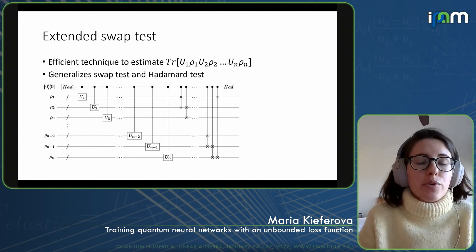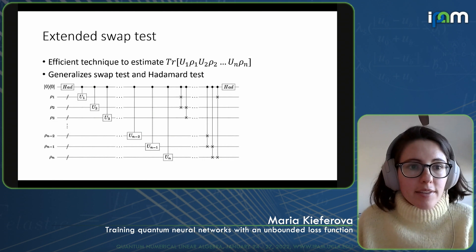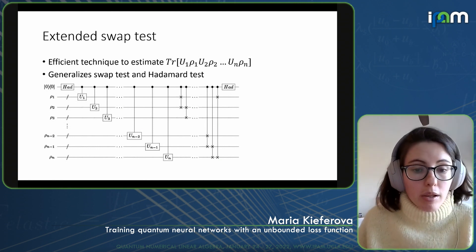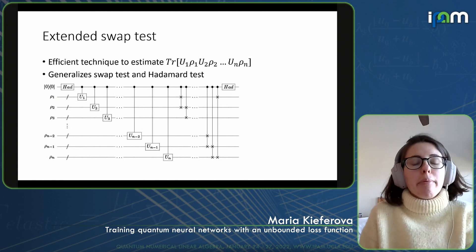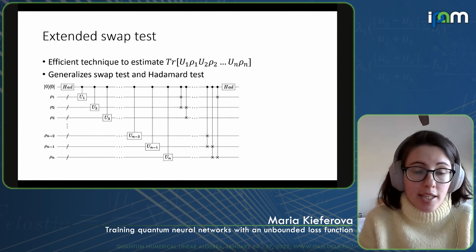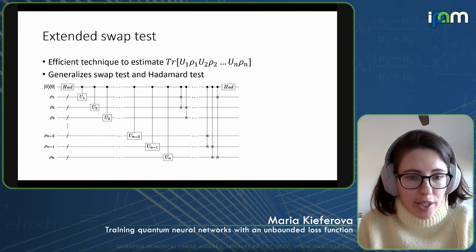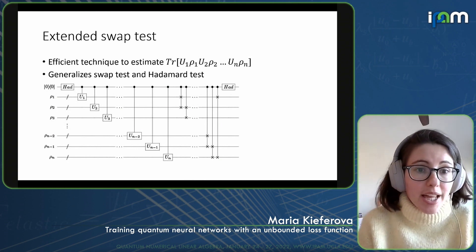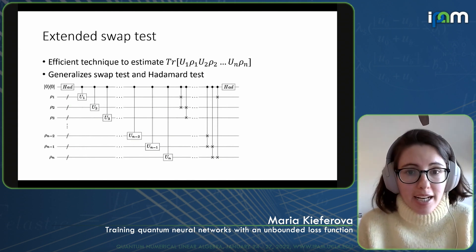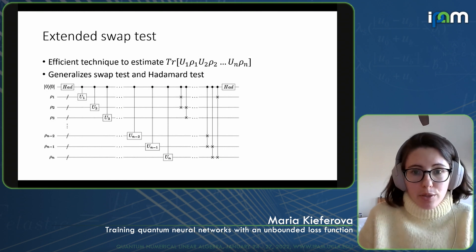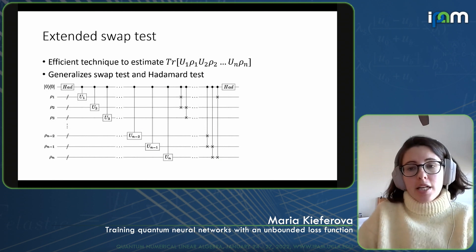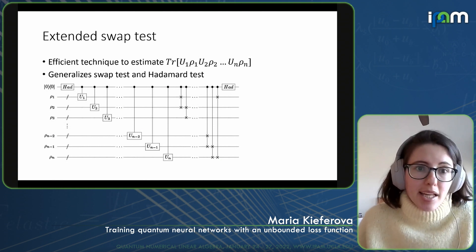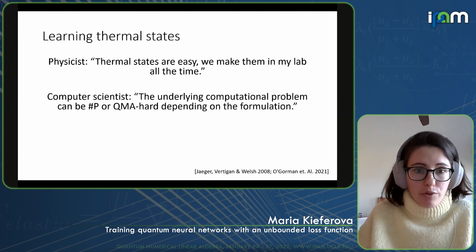The technique we use for estimating all of these gradients is something we call an extended swap test, which may be interesting for people who create quantum algorithms. This technique combines the swap test and the Hadamard test, and we extended it to involve not only one or two registers but an arbitrary number. Using this generalization allows us to compute the trace of an arbitrary product between unitaries and density matrices. So if you want to compute the trace of a polynomial of some matrices, the extended swap test is what you can use.